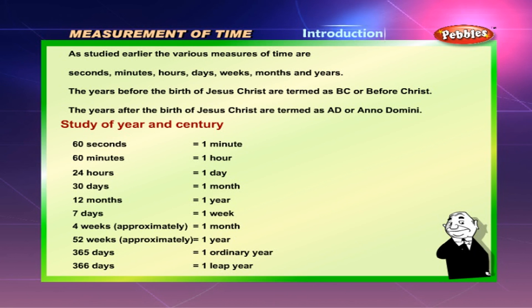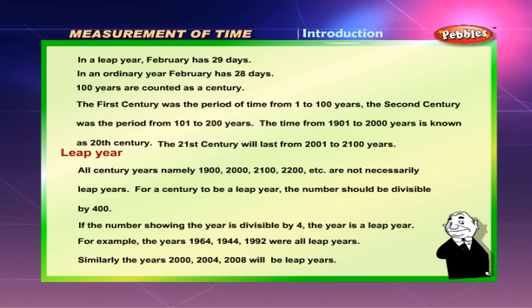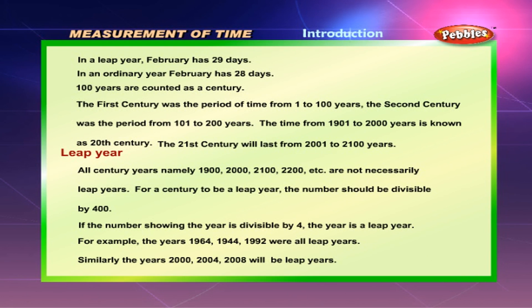366 Days is equal to 1 Leap Year. In a Leap Year, February has 29 Days. In an Ordinary Year, February has 28 Days.